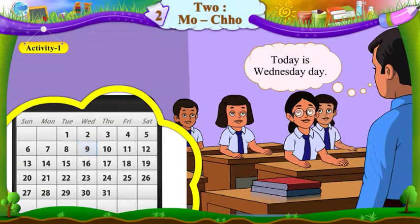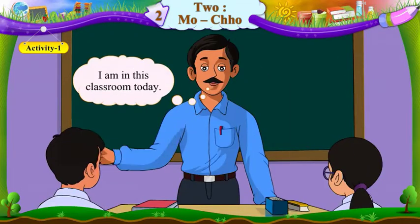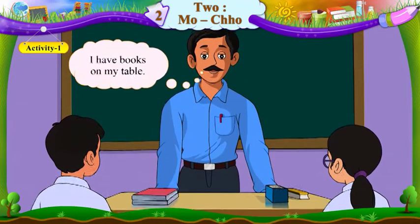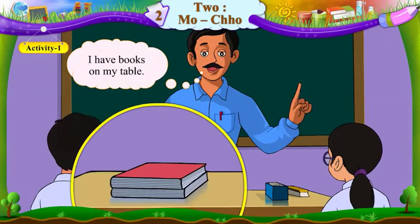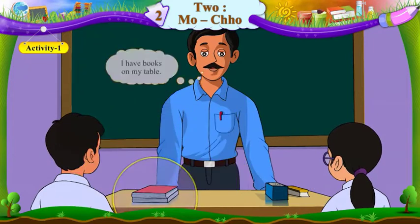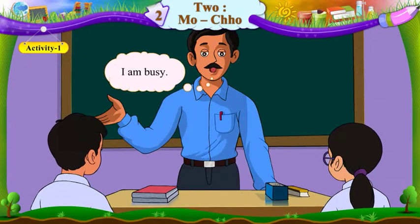Today is Wednesday. I am in this classroom today. I have books on my table. I am busy.